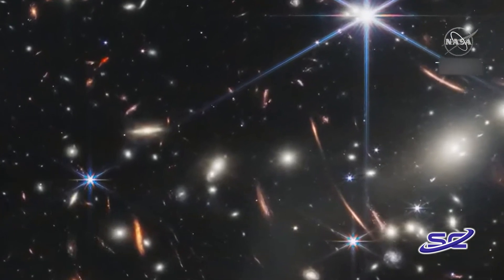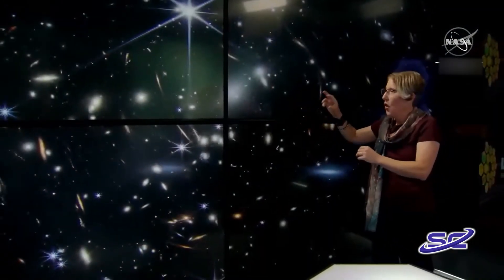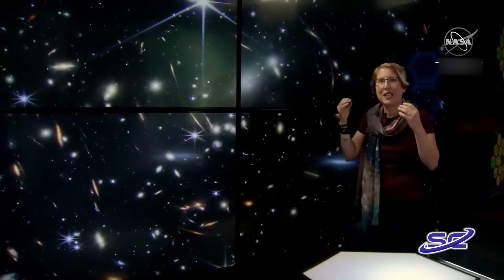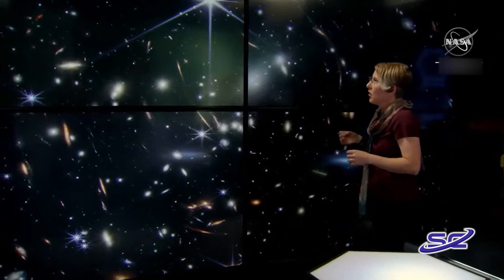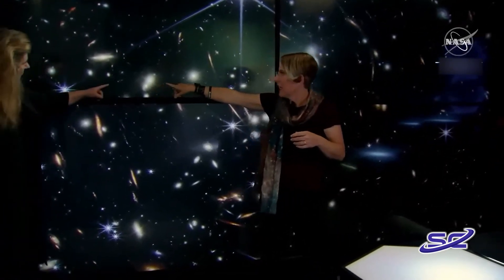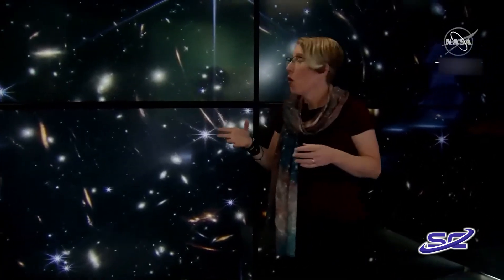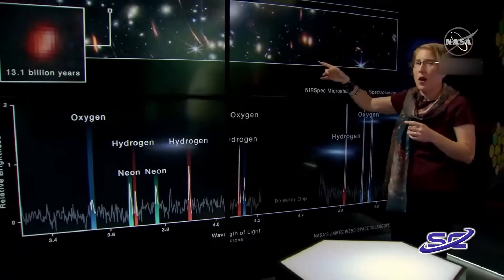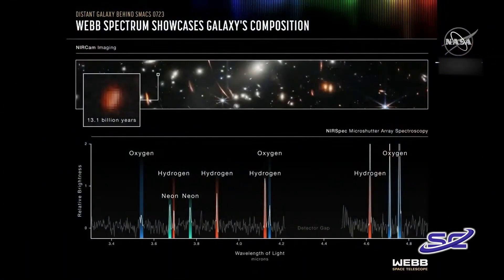That was what we built the telescope to do. The most distant of those are billions of years, we're seeing as they looked more than 13 billion years ago. Galaxies like that one right there, this little red guy. Webb got spectra to figure out what those galaxies are made of, and this is that one. We're seeing as it looked 13.1 billion years in the past, less than a billion years after the Big Bang.